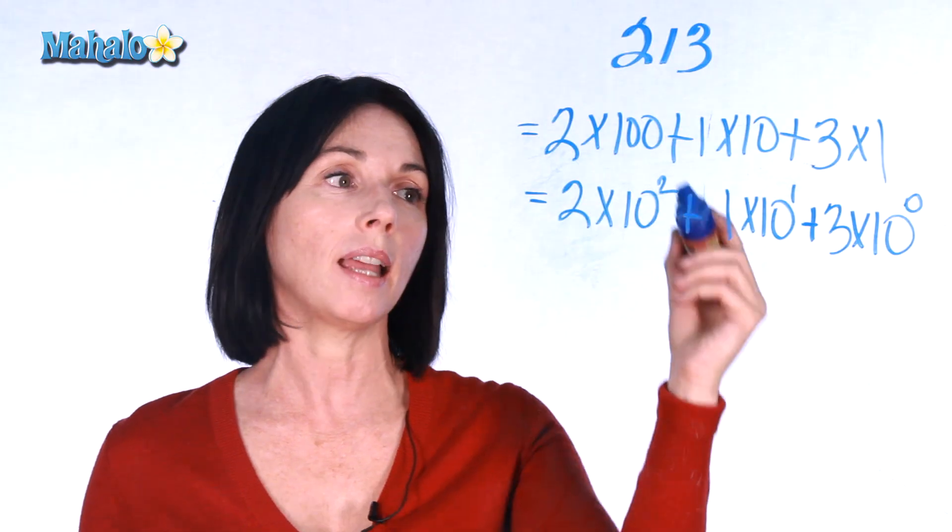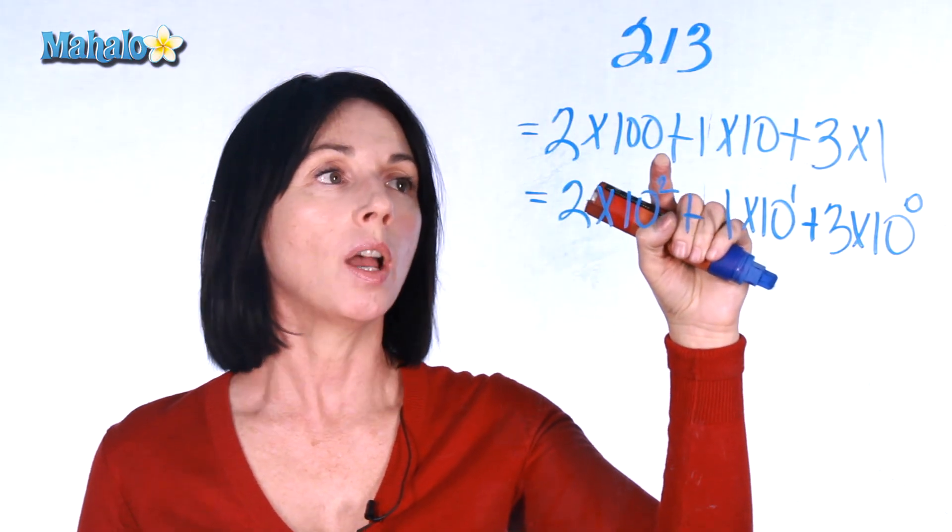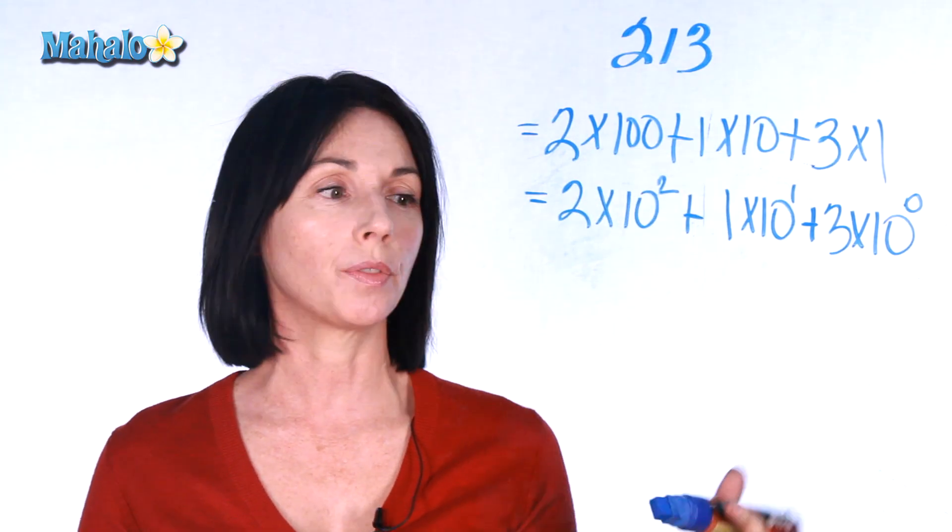So anytime you need to write an exponent of a power of 10, just look at how many zeros you have. 100 has two zeros. That means you're going to get 10 with an exponent of 2.